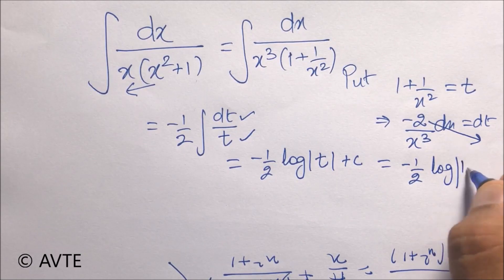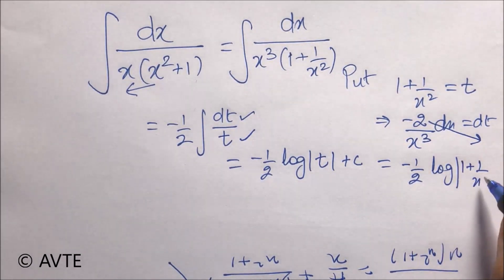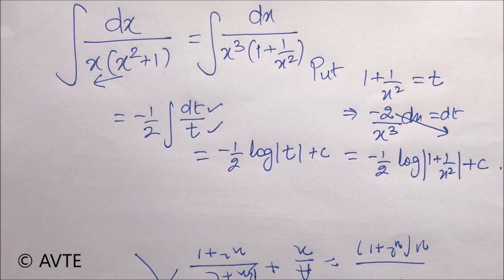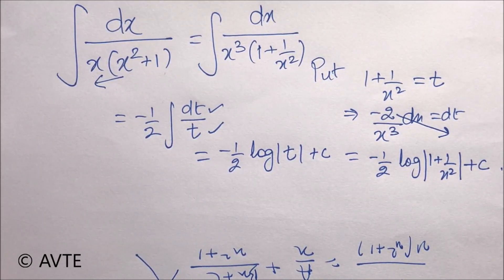Which is minus 1 by 2 log mod 1 plus 1 over x square plus c. So this is a beautiful logic.